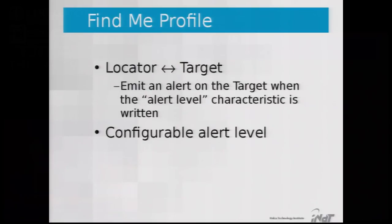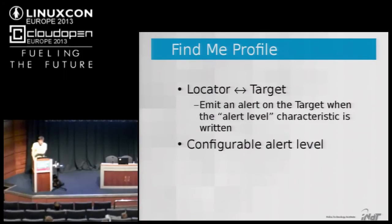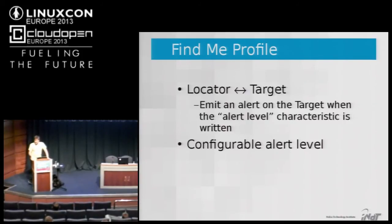The FindMe Profile is similar to the proximity profile, but instead of relying on distance threshold, it waits for user input. A locator device — with a button or similar input — writes to the alert level characteristic on the target, which then emits a configurable alert level.